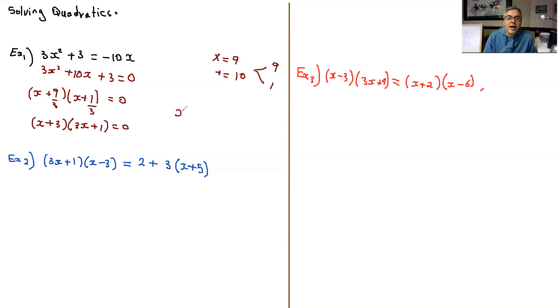And therefore, x equals negative three. That will make this part zero. And then negative one over three also will make this zero. So these are the two answers. We'll go to the next question.